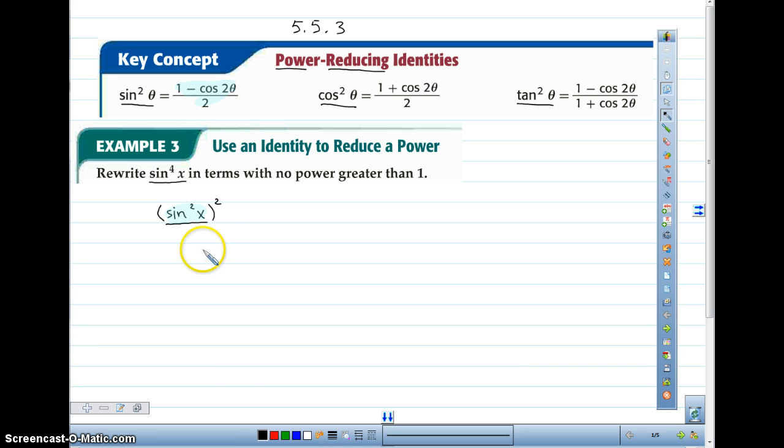So sine squared x, I can change that to 1 minus cosine 2 theta all divided by 2, and all of that is being squared. That has to be carried down. Unfortunately, we haven't eliminated the power because we still have a power greater than 1, that 2 up there. So I'm going to go ahead and simplify by squaring the numerator and the denominator of the fraction.